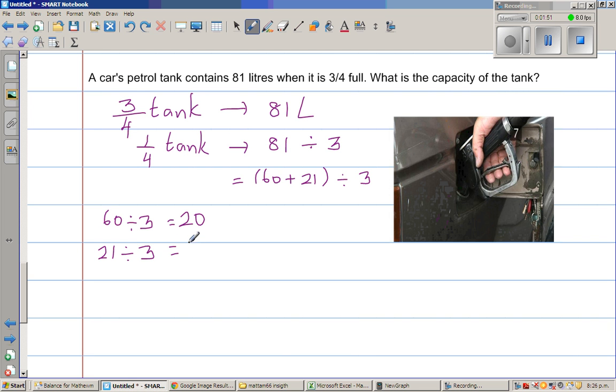And then I have to divide 21 by 3. So I think, three times what is 21? 3 times 7 is 21. Therefore 81 divided by 3 is 27 liters.